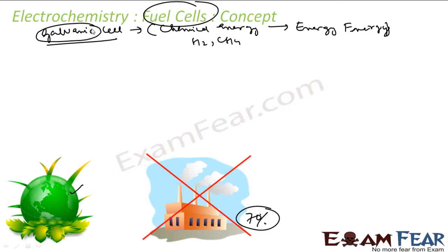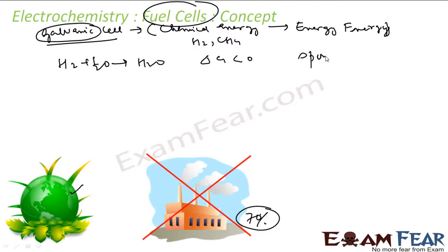Let's see one combustion reaction of hydrogen. Hydrogen reacts with oxygen to form water, and this is a spontaneous reaction — delta G is less than zero. So you keep hydrogen and oxygen nearby, it will form water, and it will generate some heat energy. And here the beauty is that for this reaction, there is a transfer of electrons.